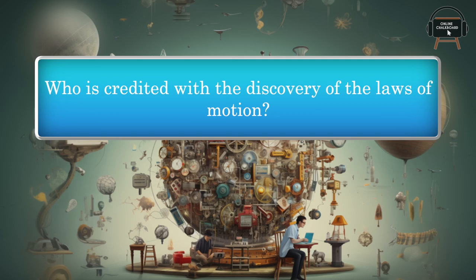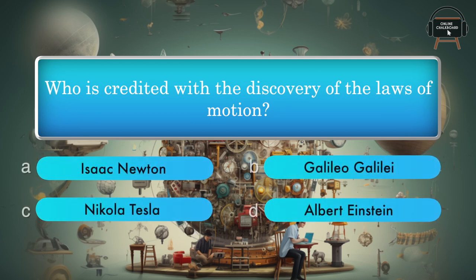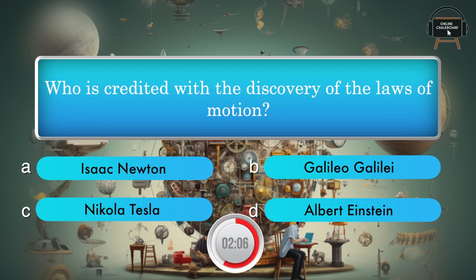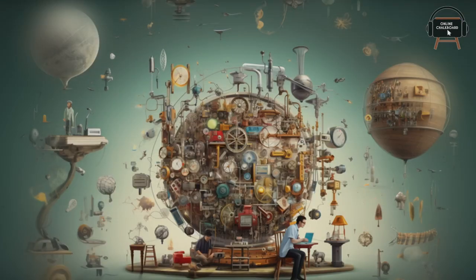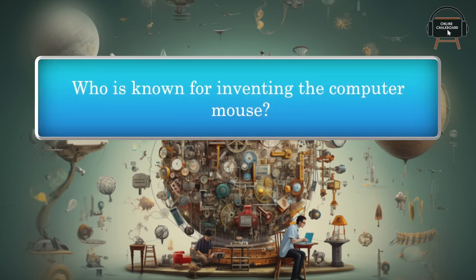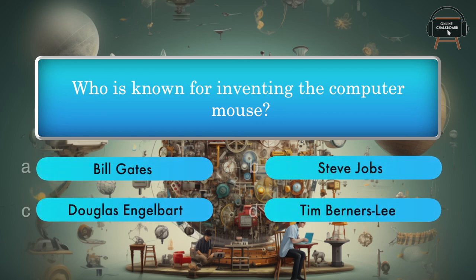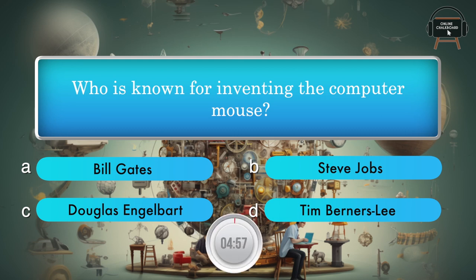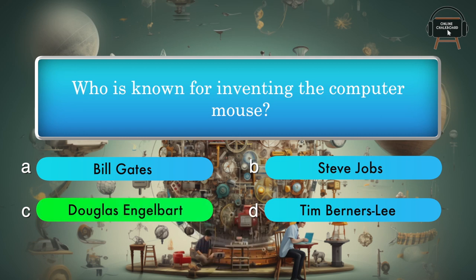Who is credited with the discovery of the laws of motion? Isaac Newton, Galileo Galilei, Nikola Tesla, Albert Einstein. Answer: Isaac Newton. Who is known for inventing the computer mouse? Bill Gates, Steve Jobs, Douglas Engelbart, Tim Berners-Lee. Answer: Douglas Engelbart.